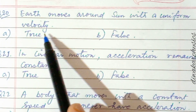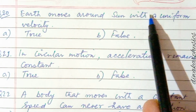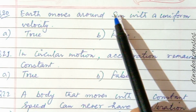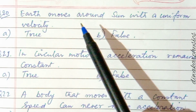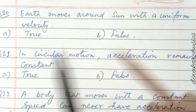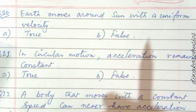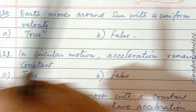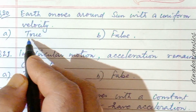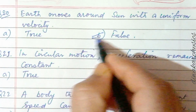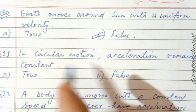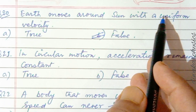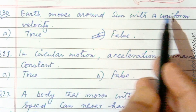Question twenty: the Earth moves around the Sun with uniform velocity — true or false? The Earth moves in a roughly circular orbit. In circular motion, speed may be the same but velocity is not uniform because the direction changes continuously. So the answer is false.